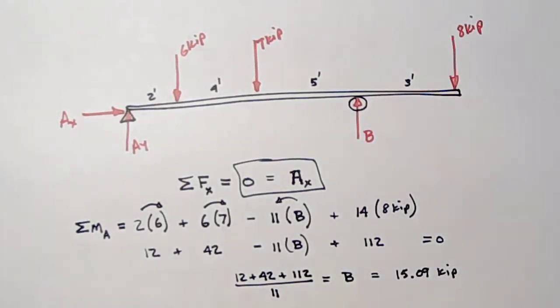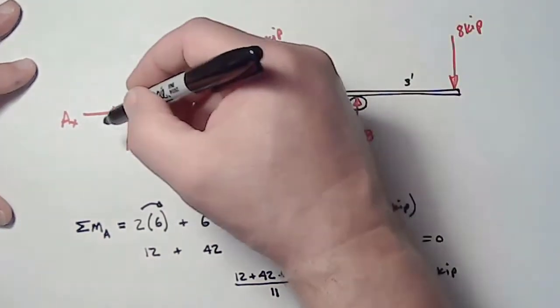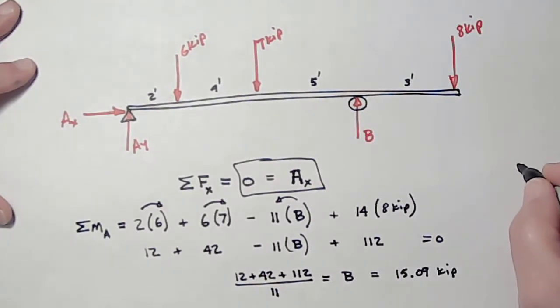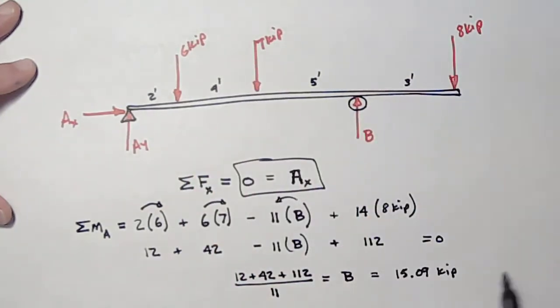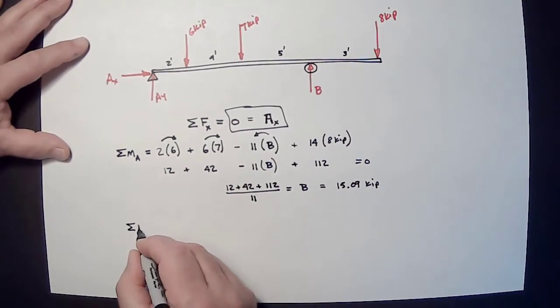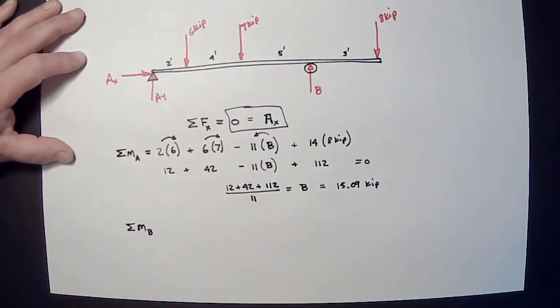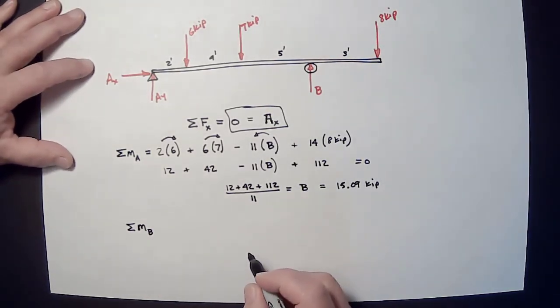Now, at this point, I could easily go AY plus B have to equal six plus seven plus eight. And I know B. So, I could easily solve for A, but I'm not going to. I'm going to take the moments about point B, just to show that it can be done.